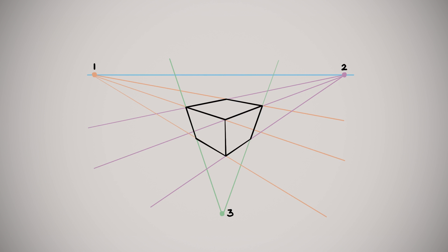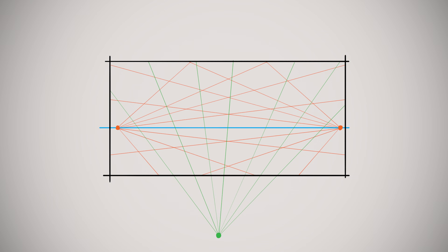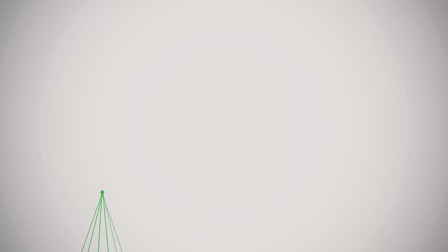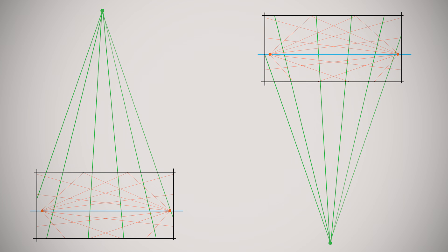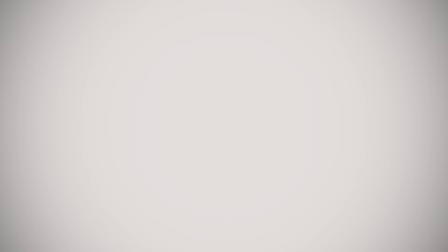That third vanishing point doesn't seem to follow the rules of the other two, so it does require some explanation. In three-point perspective, the third vanishing point is never placed on the horizon line along with the other two. It will be placed either far above the horizon line when your point of view is tilted up, or far below when it's tilted down, and almost never located within the picture plane. In most circumstances, the third vanishing point will exist evenly between the two points on the horizon line.